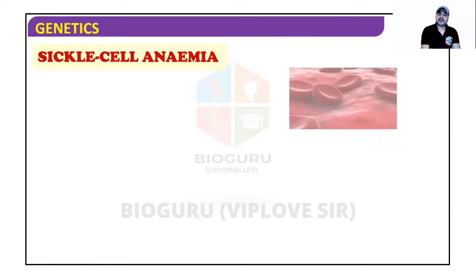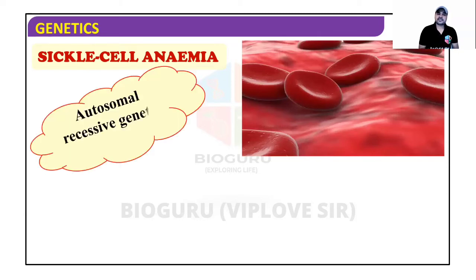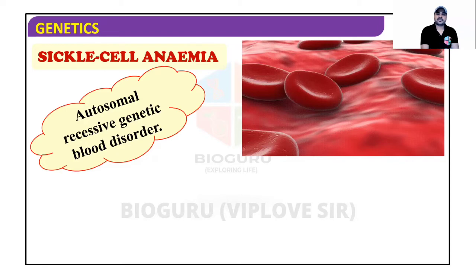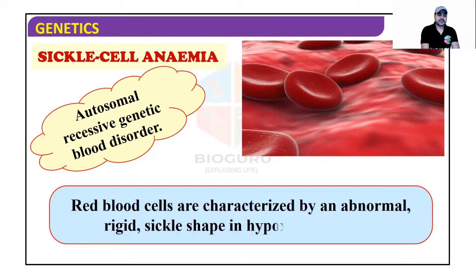Next Mendelian disorder is sickle cell anemia. In this condition, the shape of RBCs becomes sickle-shaped, and these RBCs cannot properly bind oxygen. It is an autosomal recessive genetic blood disorder — not on sex chromosomes but on autosomal chromosomes. RBCs are characterized by an abnormal rigid sickle shape in hypoxia conditions.